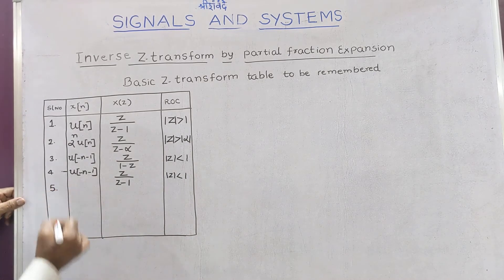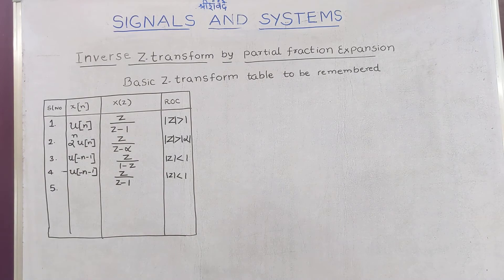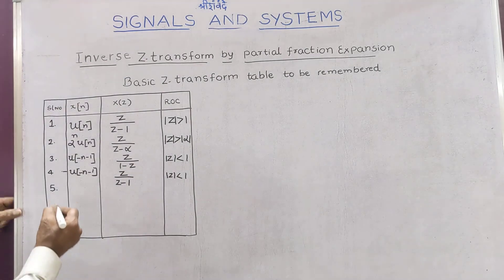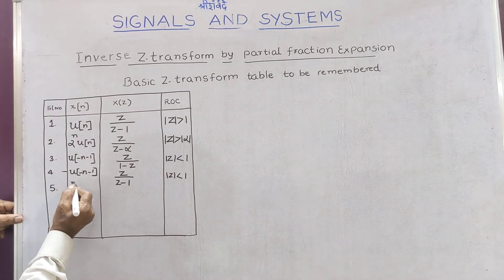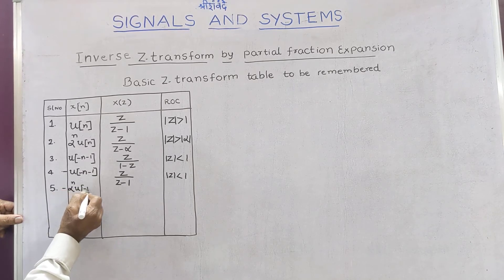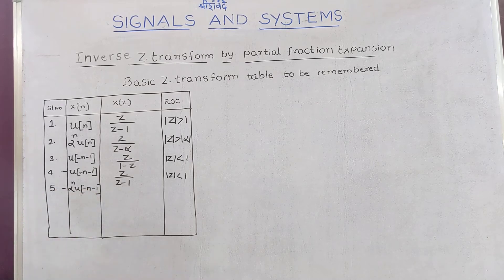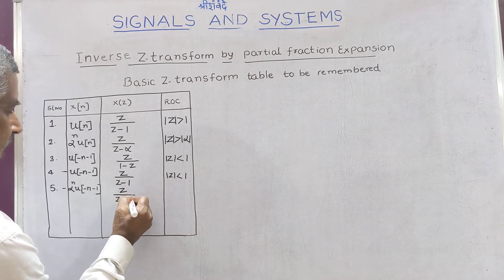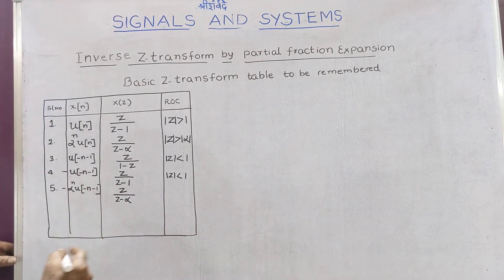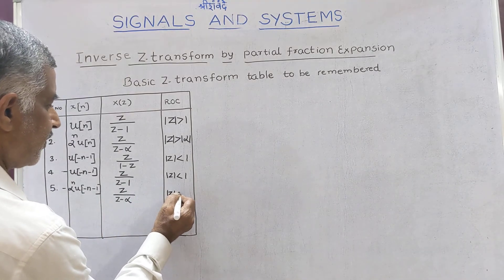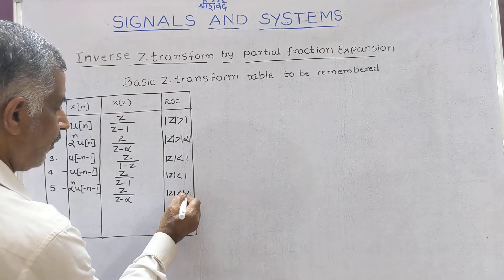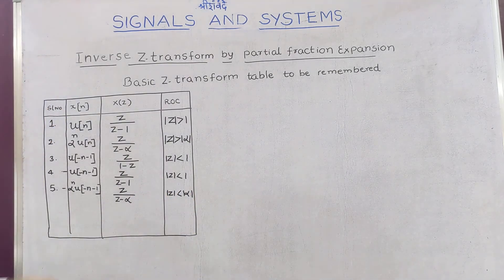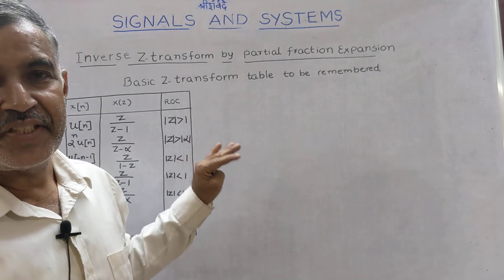The 5th one: this sequence gets multiplied with the exponential sequence, that is -α^n · u[-n-1]. Its Z transform is Z over Z minus α, with ROC |Z| less than |α|. You can easily remember this from the basic Z transform pair table.